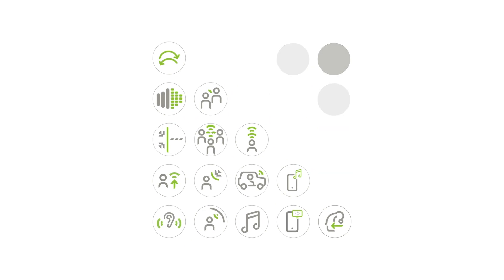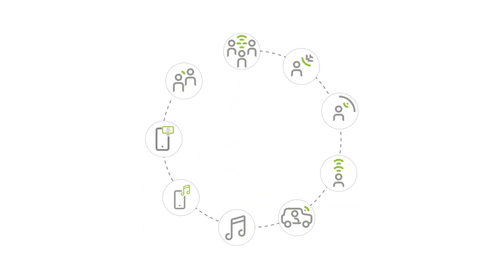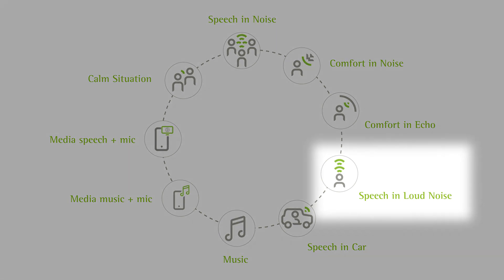So when Autosense OS classifies an environment that is speech in loud noise, it will automatically steer the beam former into stereo zoom. Okay. And close the vent. Automatically? Absolutely. Okay. So that's obviously going to have an impact, but what evidence have you got to support that?